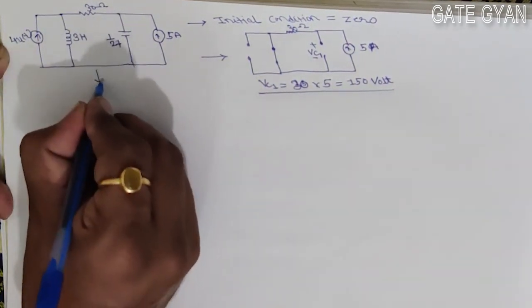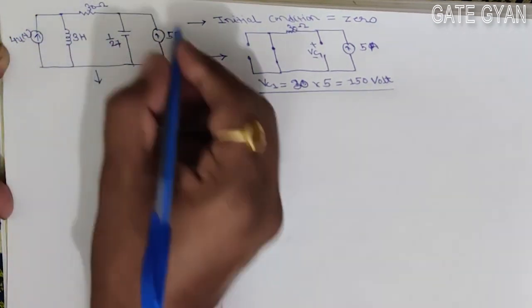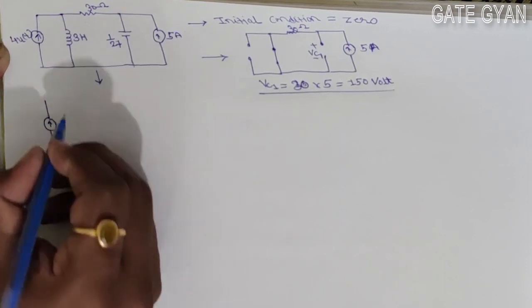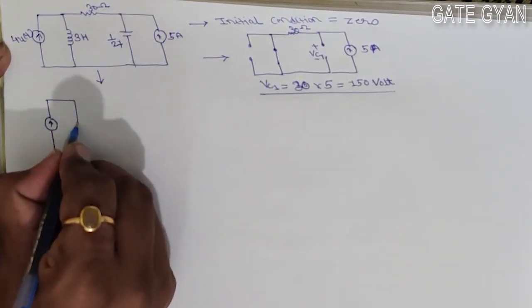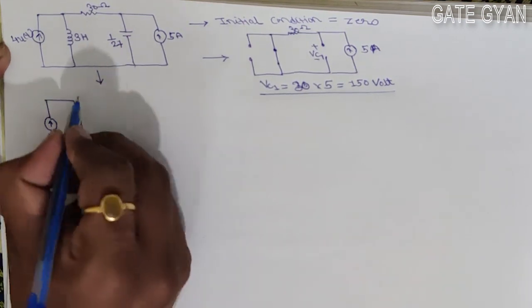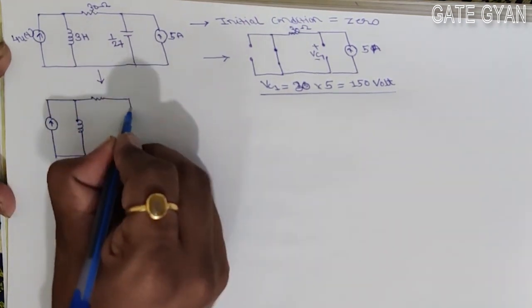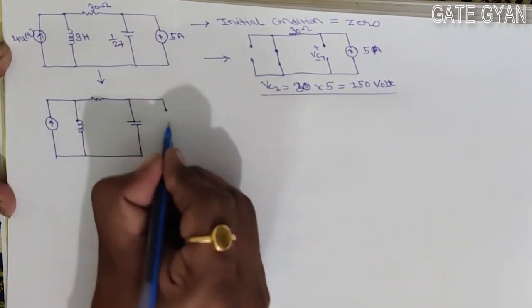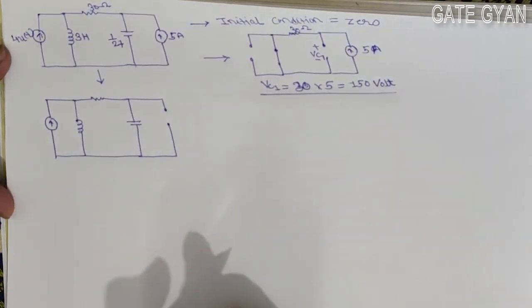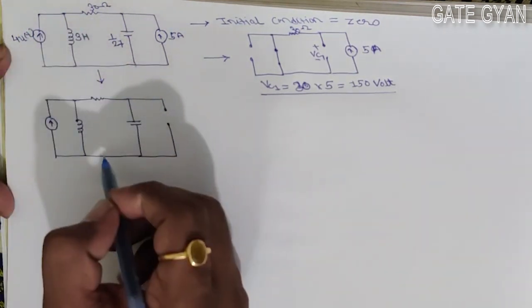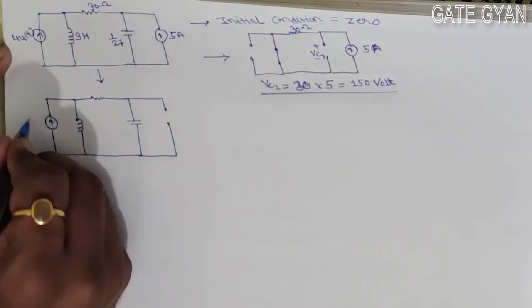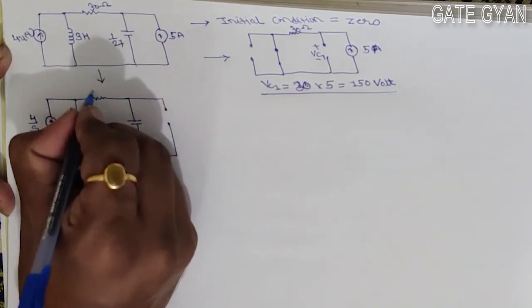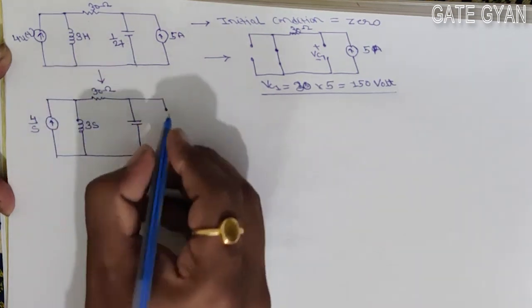Now I will consider the AC current source only. I will redraw the circuit with the DC current source open. I will use the Laplace transform here. So my 4u(t) will be 4/s in the s-domain. The inductor becomes 3s and the resistor is 30 ohm.